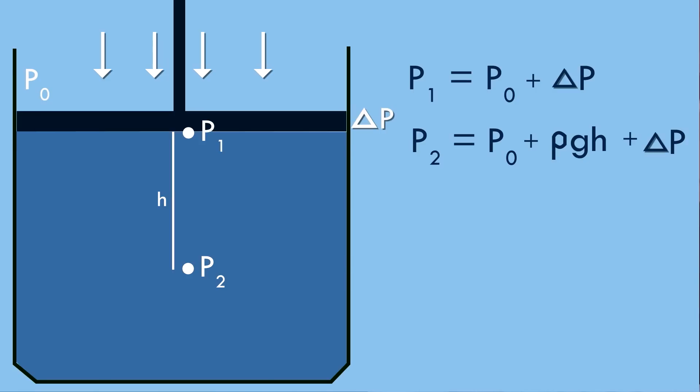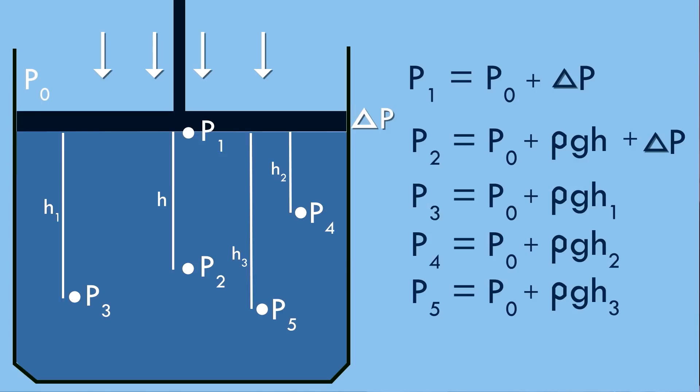So if you bring back all of the earlier points that we had, at each of those points the pressure is now equal to p0 plus ρg times corresponding depth plus Δp. Our original value of pressure plus this new change in pressure that I applied, Δp. So this change in pressure that I applied to the surface is getting transmitted to every other point as the same value Δp. That is exactly what Pascal said.